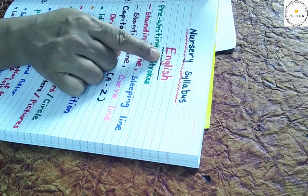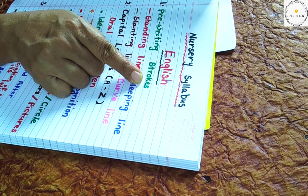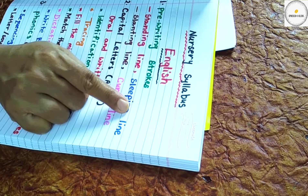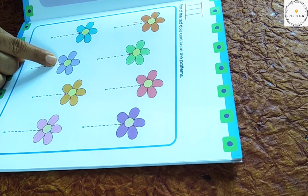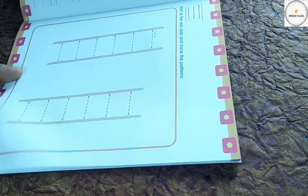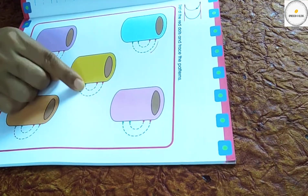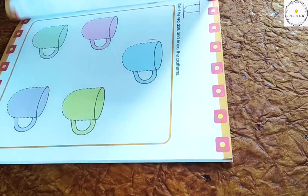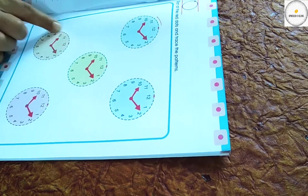In English, children have to practice pre-writing strokes first before they are exposed to writing letters. They have to practice standing line, sleeping line, slanting line, and curved line through pre-writing books. You can help your child practice standing line, sleeping line, right slanting line, left slanting line, right curve, left curve, upper curve, down curve, and circular line.